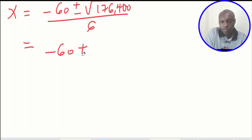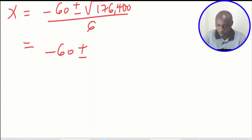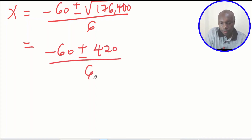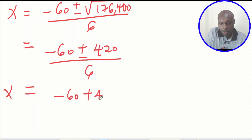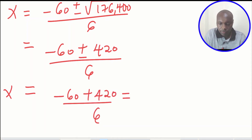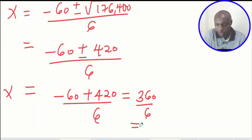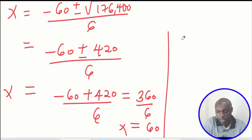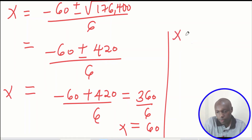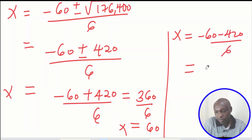So x equals negative 60 plus or minus 420, divided by 6. The first value of x: negative 60 plus 420 divided by 6 gives 360 divided by 6, which is 60. The second value of x: negative 60 minus 420 divided by 6 gives negative 480 divided by 6, which is negative 80.